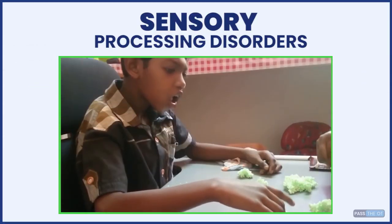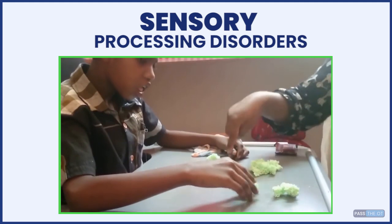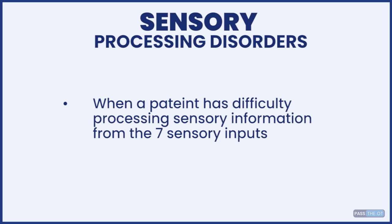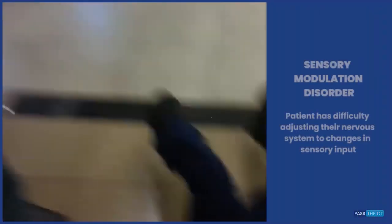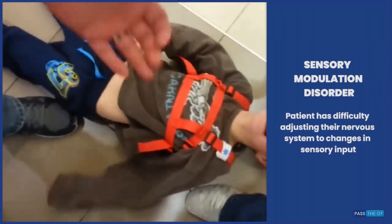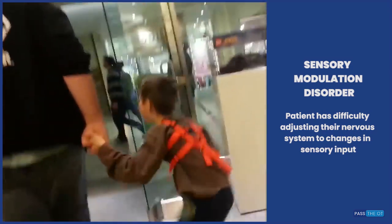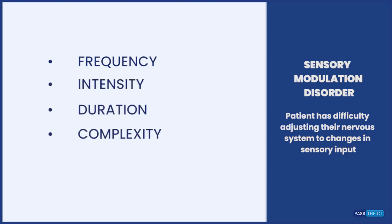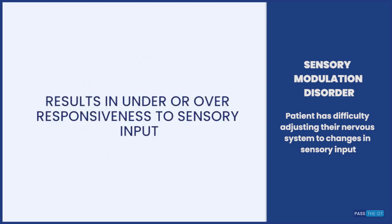Sensory processing disorders occur when a patient is having a hard time processing sensory information from those seven sensory inputs. Sensory modulation disorder is when a patient has difficulty adjusting their nervous system to changes in sensory input — in terms of frequency, intensity, duration, complexity, or novelty of an activity. This may result in under- or over-responsiveness to sensory input.